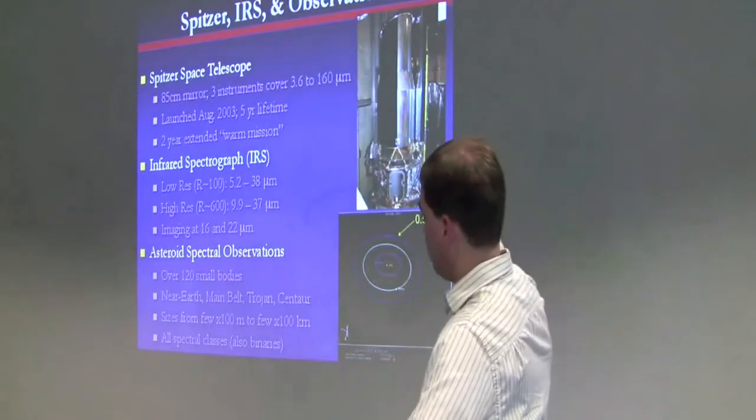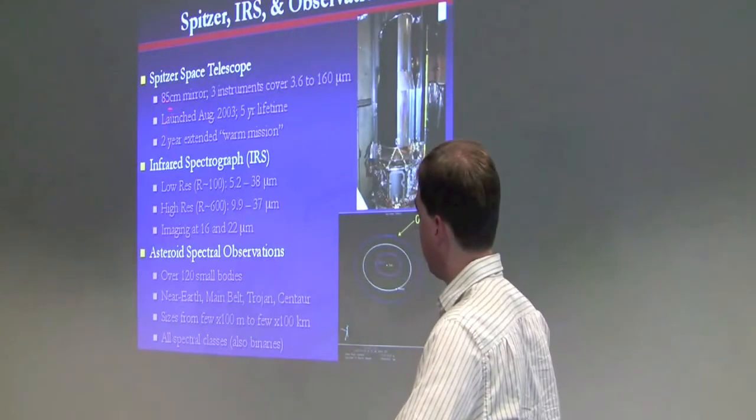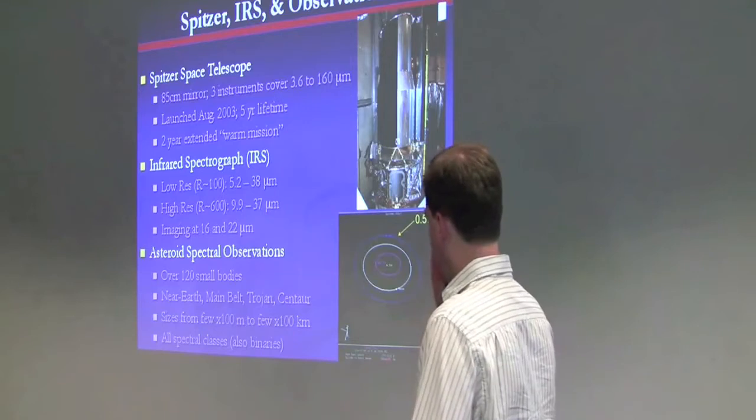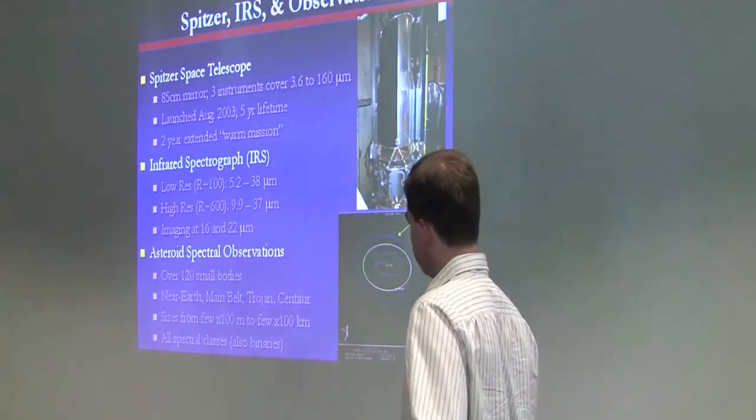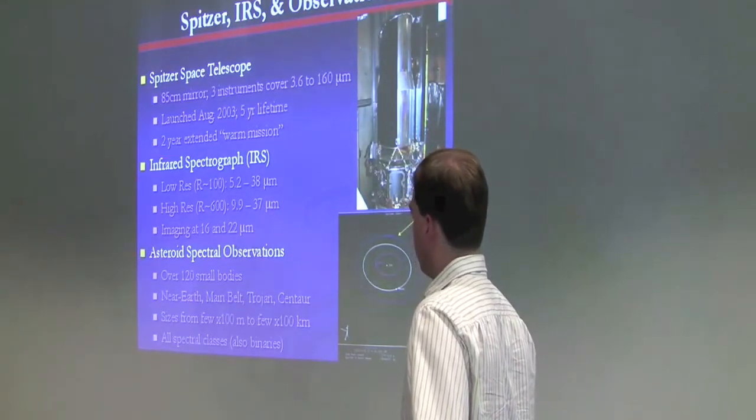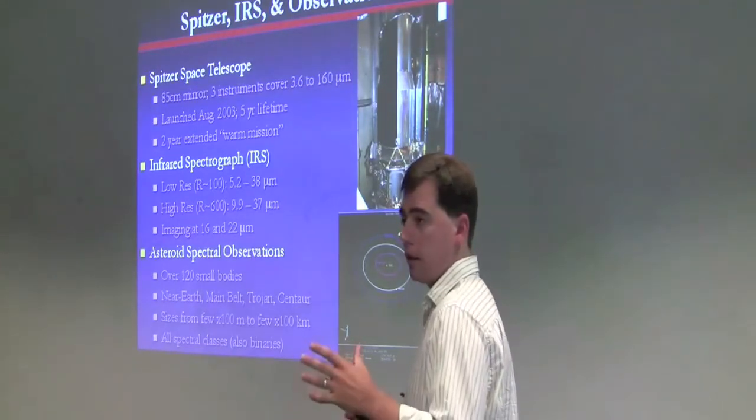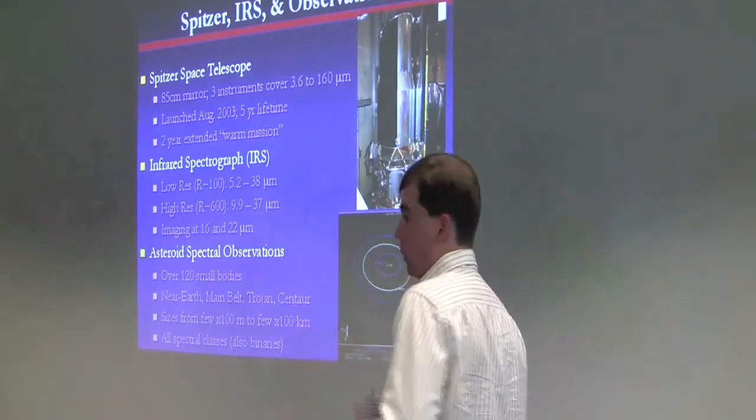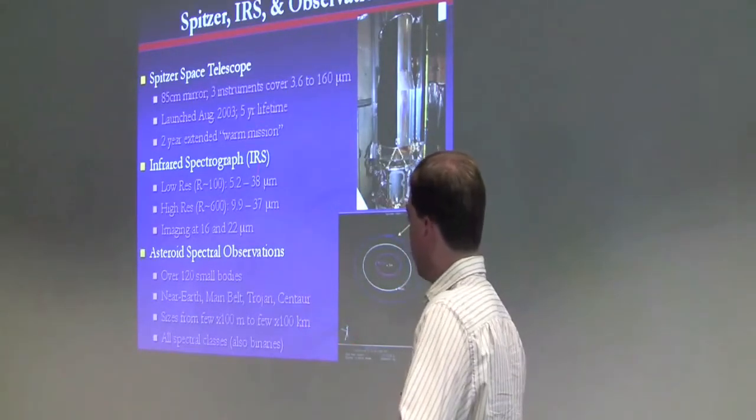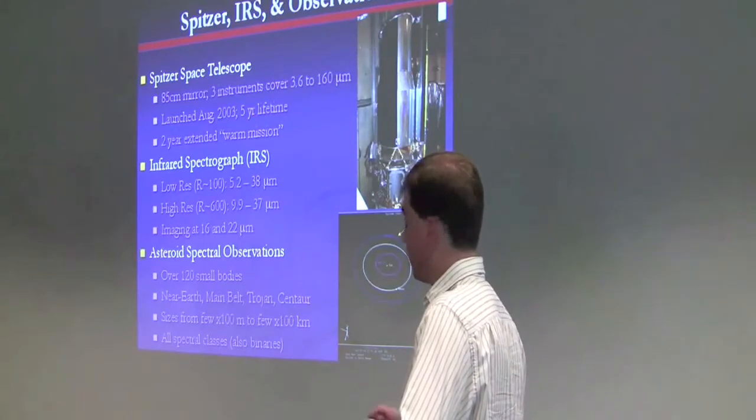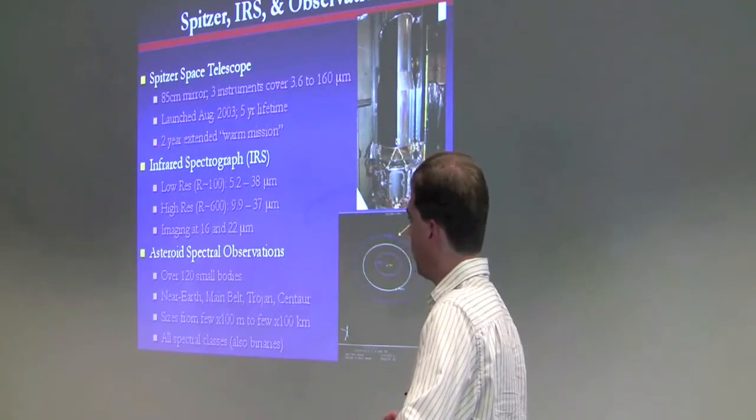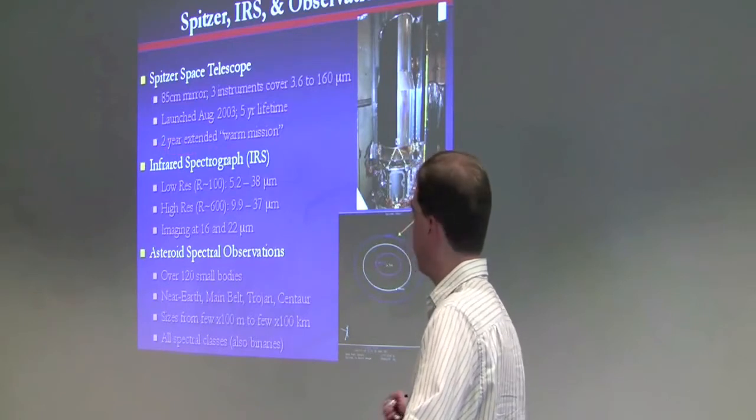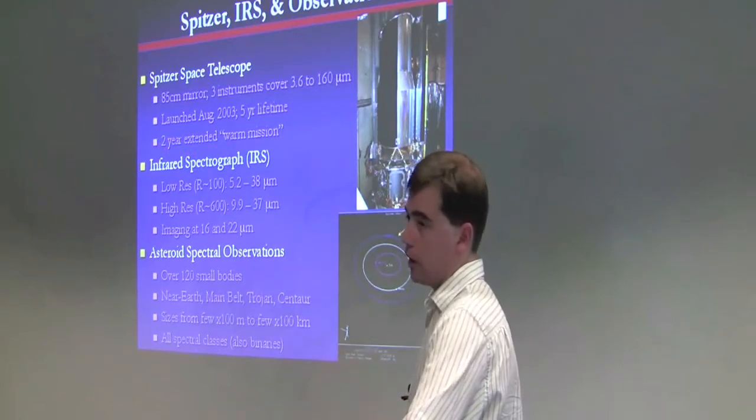Now the Spitzer Space Telescope was kind of a modest size telescope with an 85 centimeter primary mirror. It has on board three instruments that cover the 3.6 to 160 microns, both imaging and spectroscopy. It was launched in August 2003, with an expected five-year lifetime. Instruments have to be cooled with liquid helium, and the lifetime is limited by the length of time that liquid helium will last, and it's expected to run out now next March, April, more or less. NASA has now approved a two-year extended warm mission in which just the 3.6 and 4.5 micron bands of the imaging camera will be used.